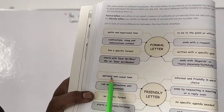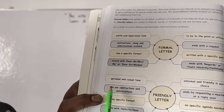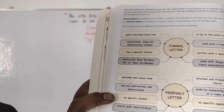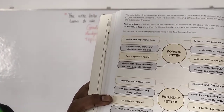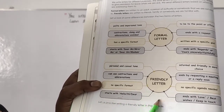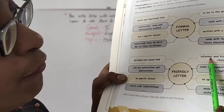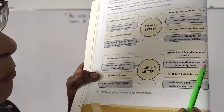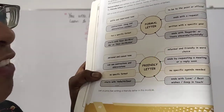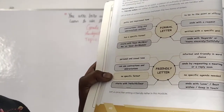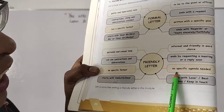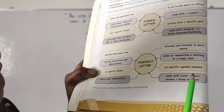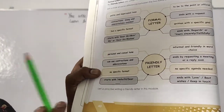For a friendly letter: use a personal and casual tone; you can use contractions and abbreviations; there is no specific format. Start with 'Hello,' 'Hi,' or 'Dear.' Use informal and friendly word choices. You may request a meeting or ask for a reply soon. No specific agenda is needed. End with 'Love,' 'Best wishes,' or 'Keep in touch.'